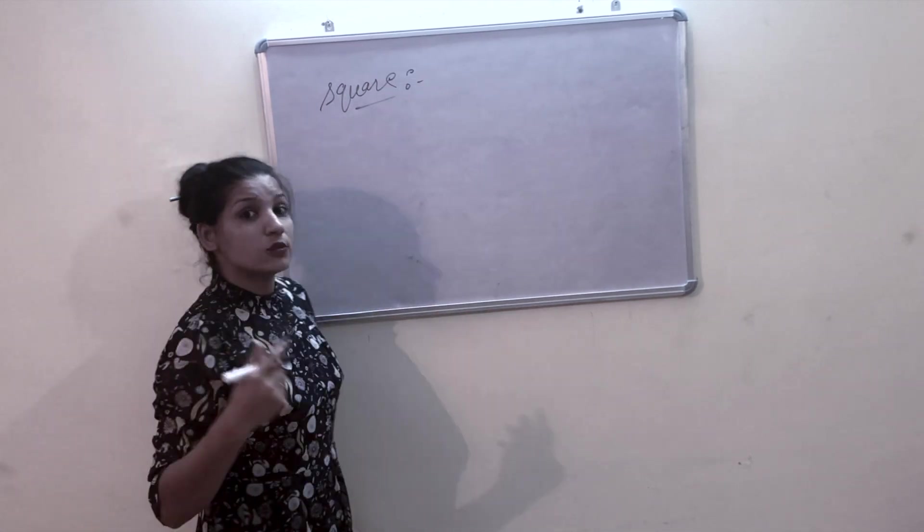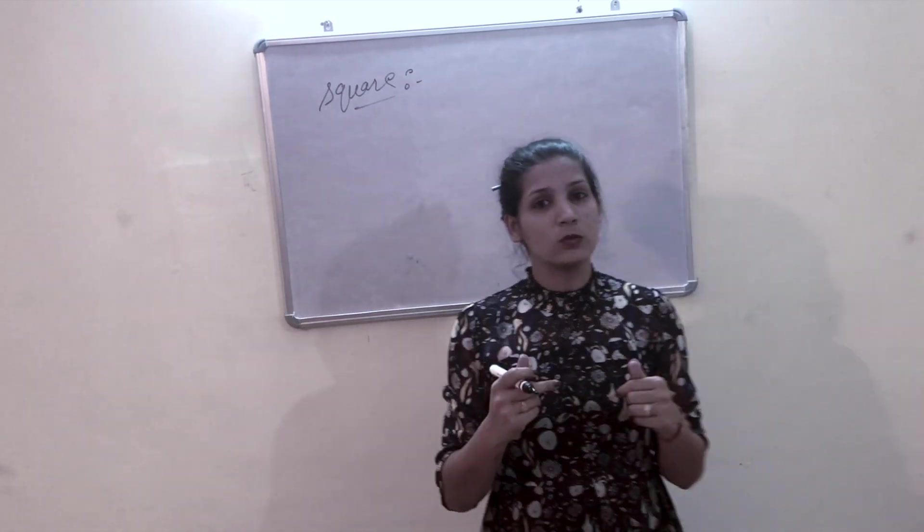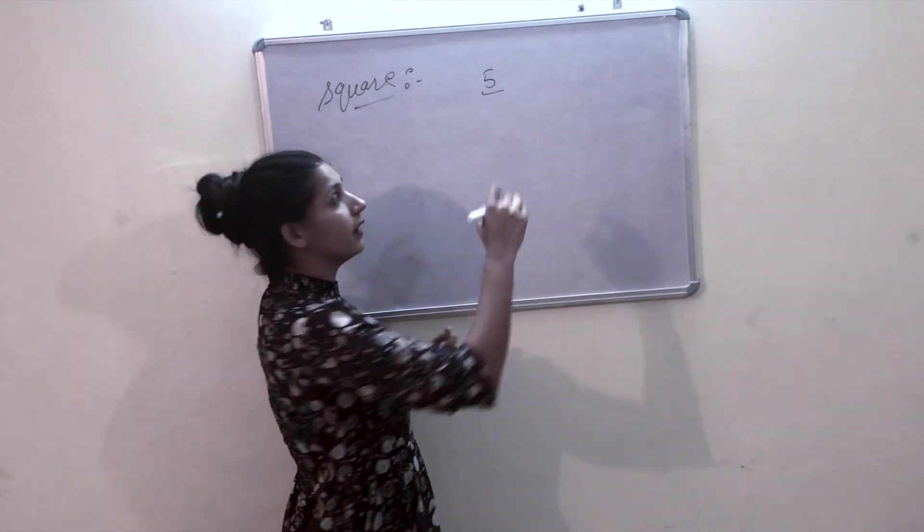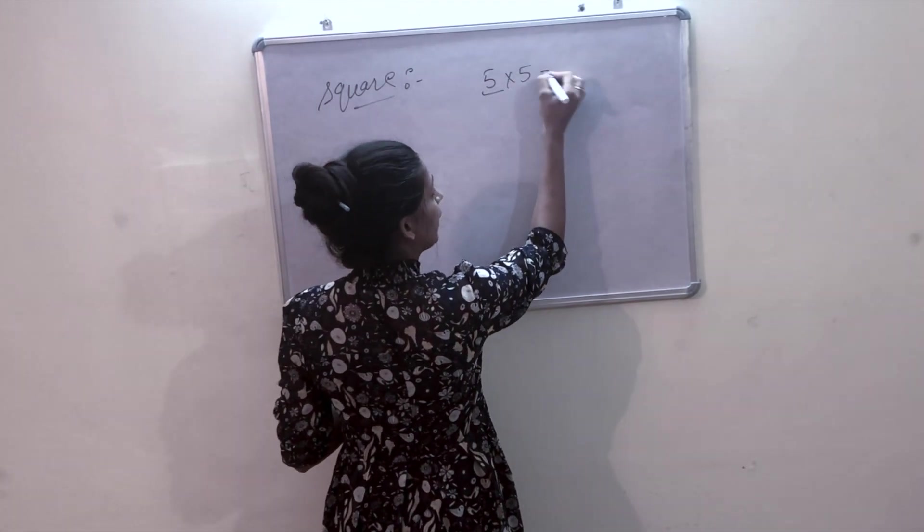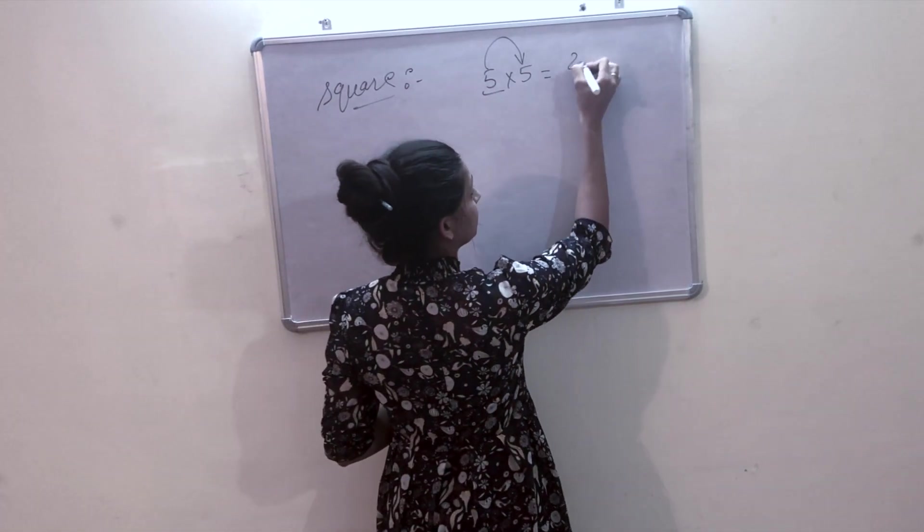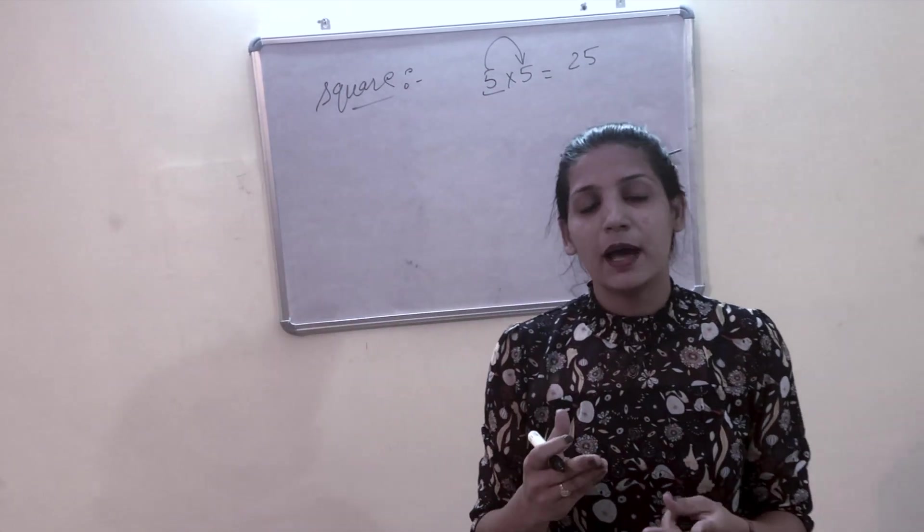As we know very well, when we take a square, we multiply that number by the same number. Like if we take 5 squared, we have to multiply 5 by 5. It means 5 times 5 is 25. 5 is a very small number, that's why we can do it very easily.